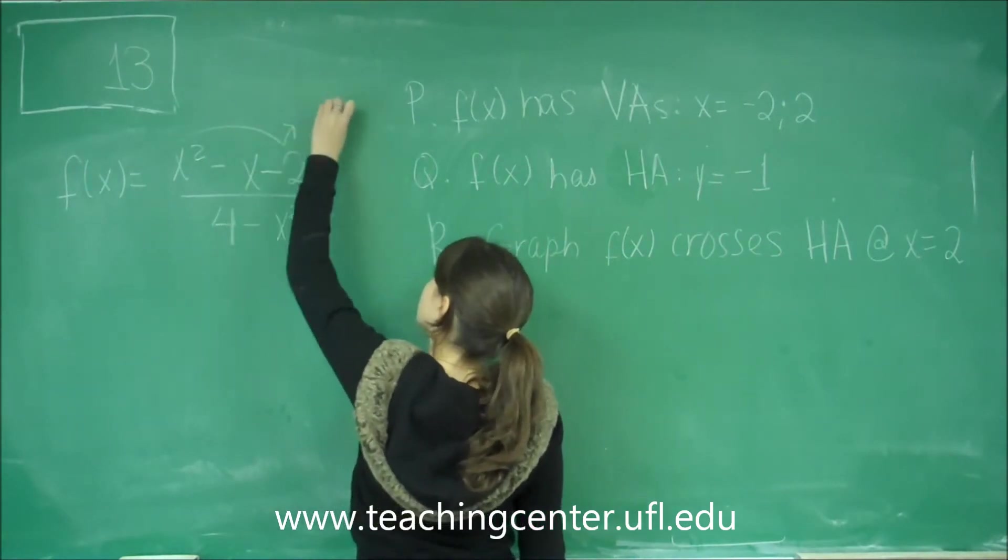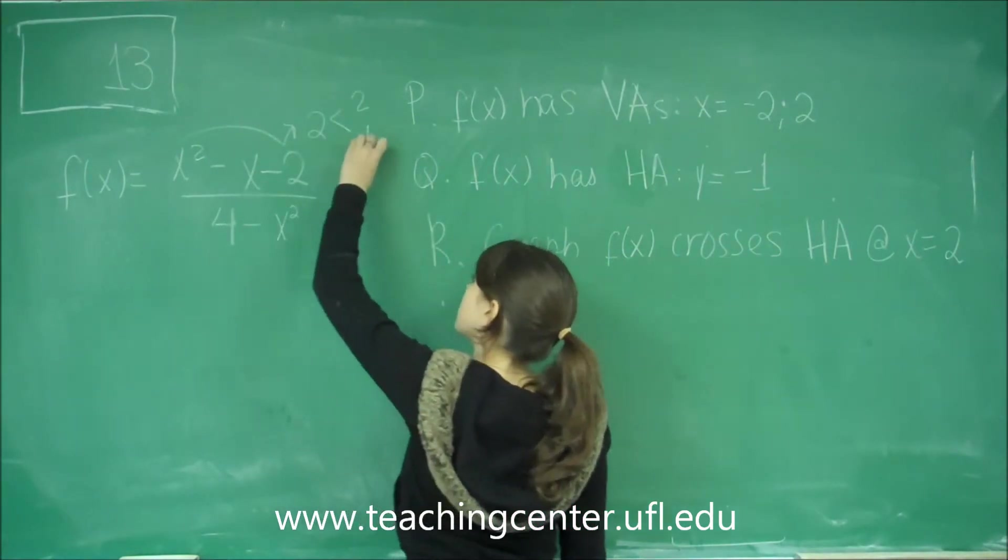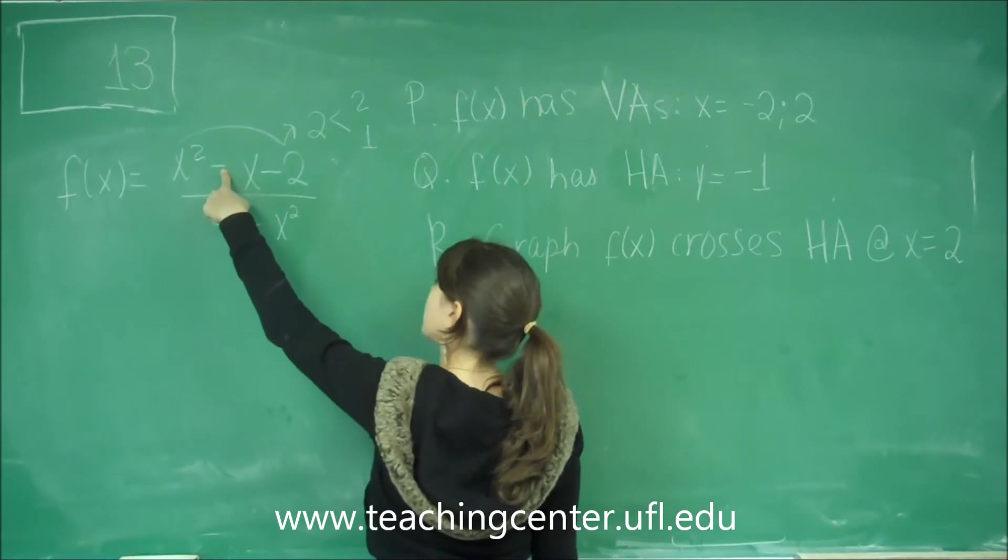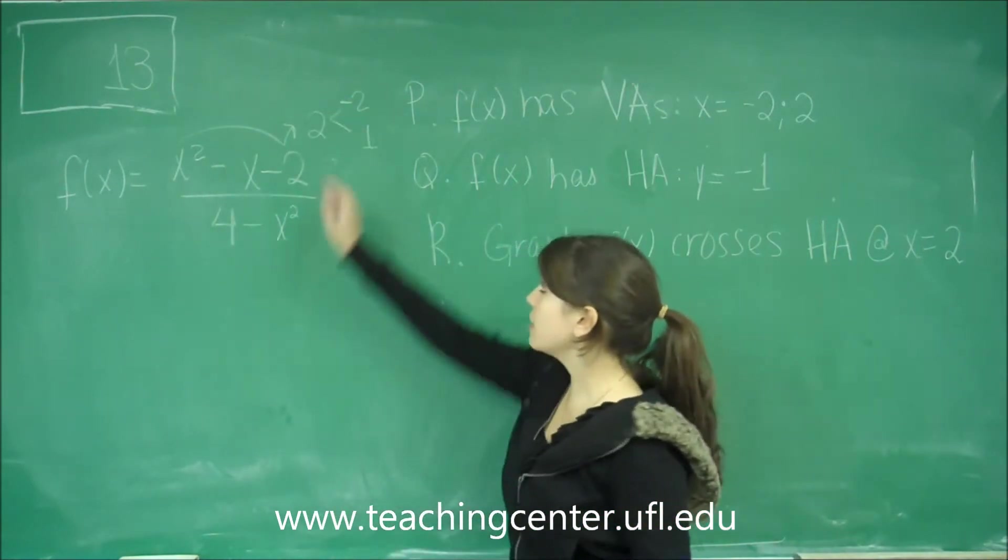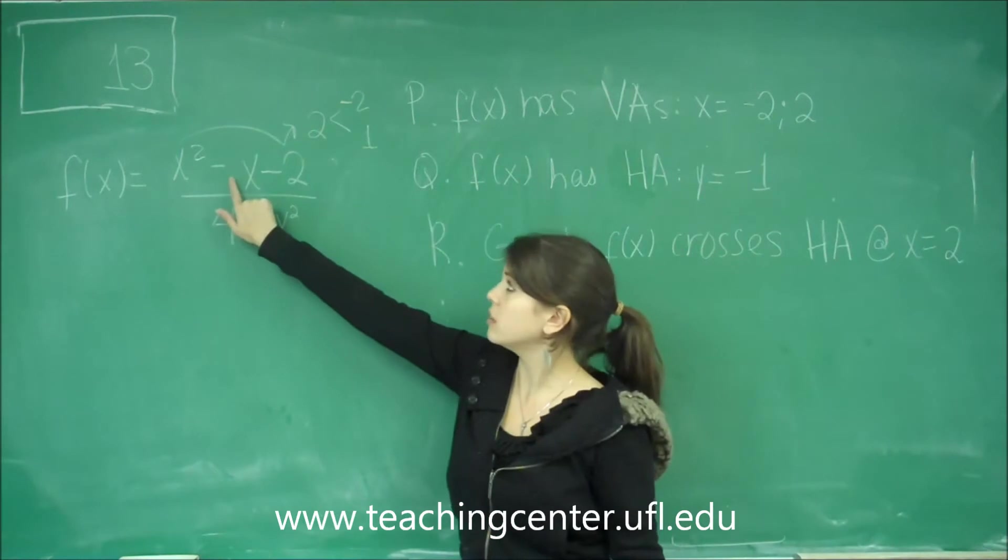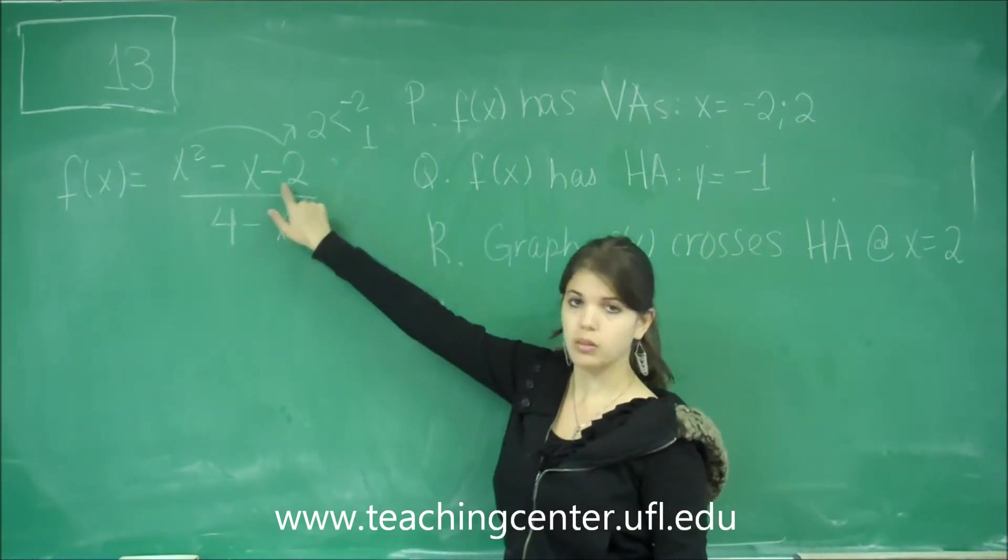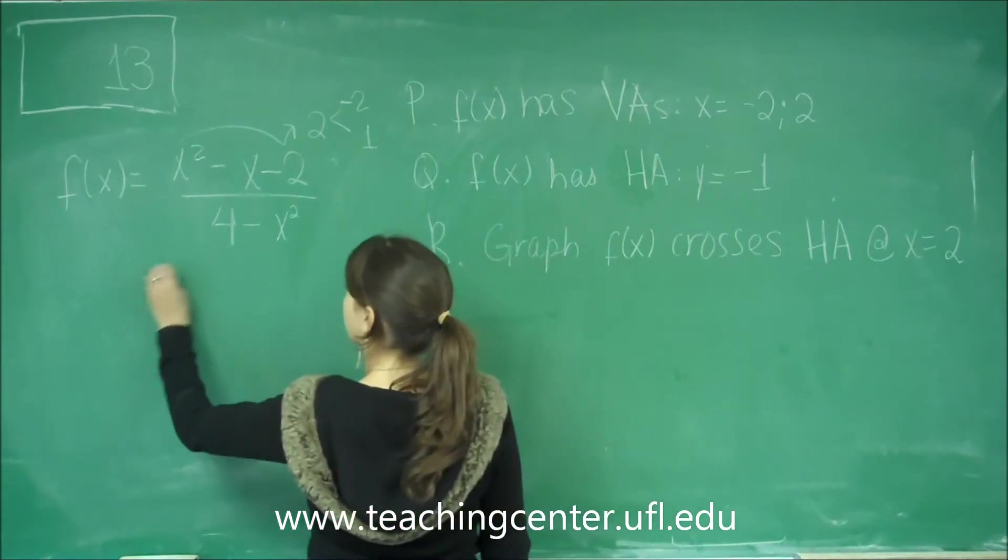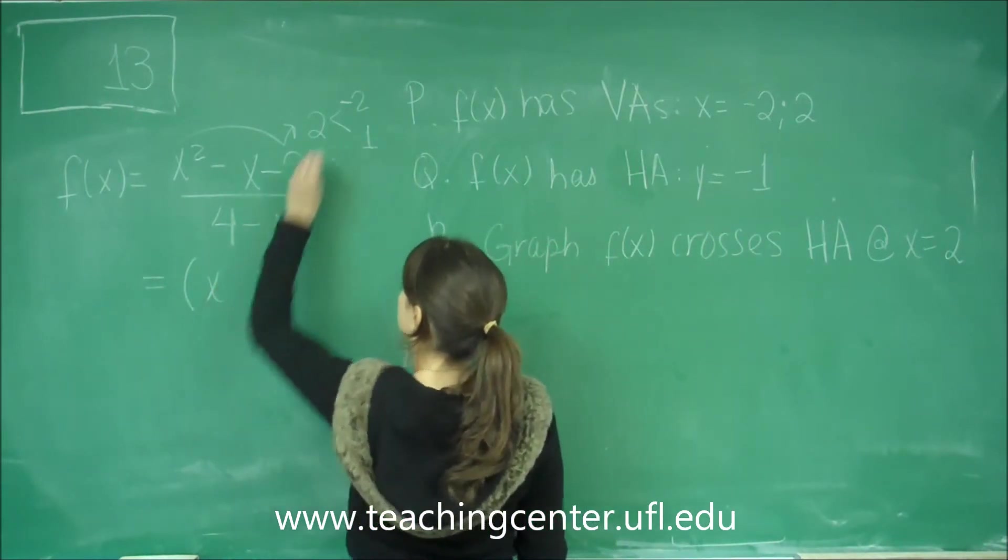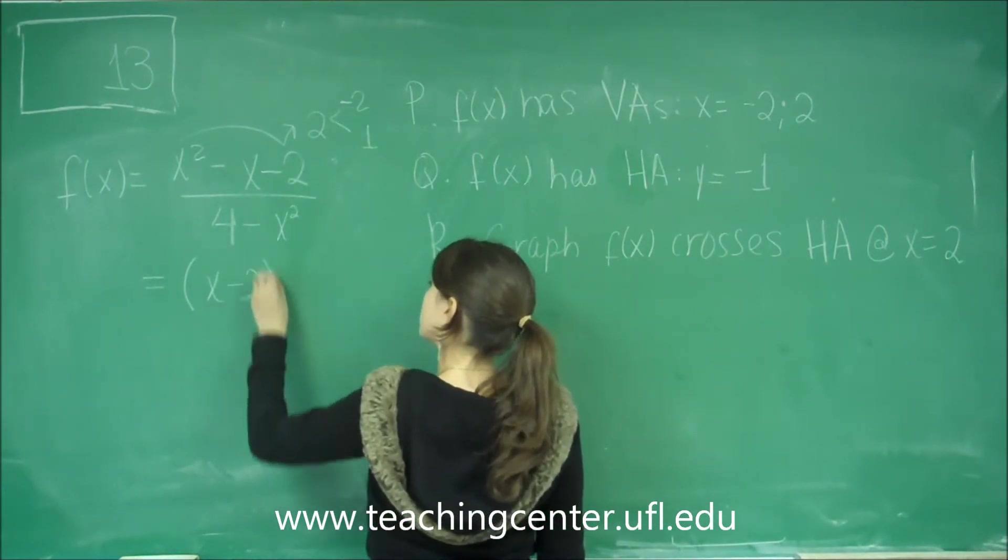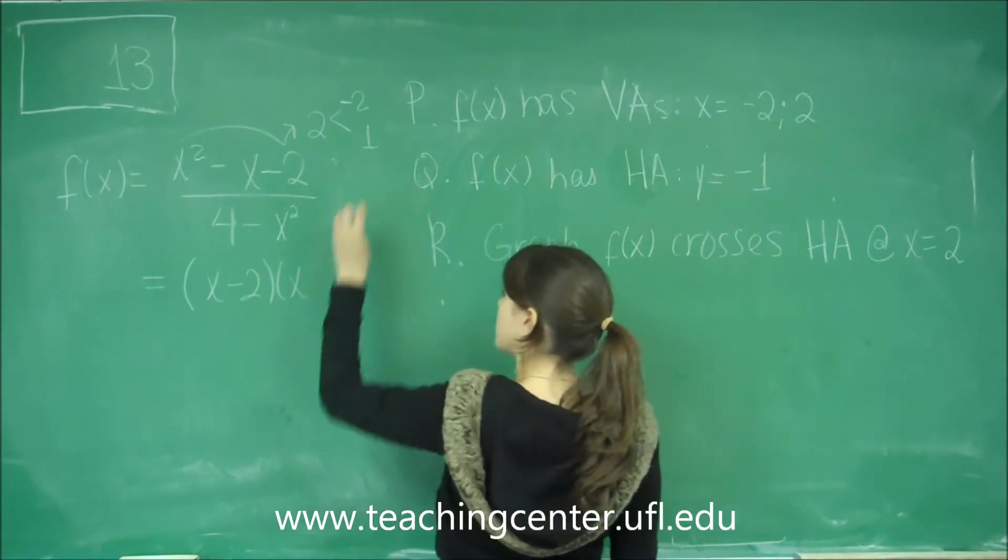This gives me a 2. To get a negative 1, I have to make this negative. So negative 2 plus 1 gives me a negative 1, and at the same time, negative 2 times 1 gives me a negative 2. So now I can rewrite that as x minus 2, x plus 1.